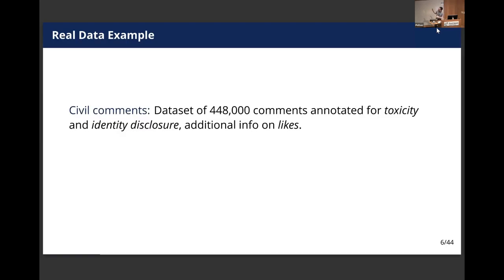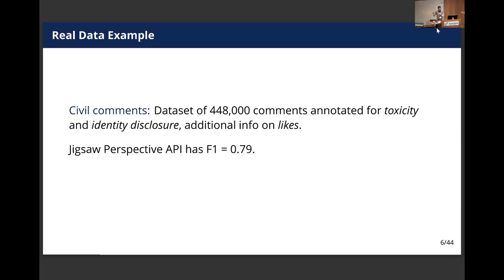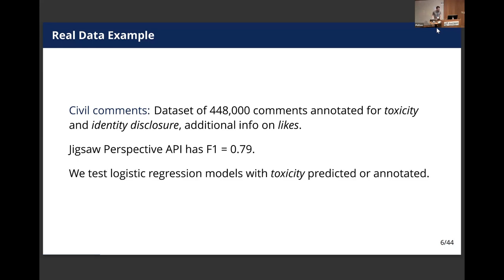I'm going to show that this is a problem using a real data example from the Civil Comments dataset — 448,000 comments annotated by humans for whether the comment is toxic and whether it discloses identity, such as someone's race or ethnicity. We also use the number of times the comment was liked. We ran this human-annotated dataset through the widely used Jigsaw Perspective API — Jigsaw is a company that's part of Google. The Civil Comments dataset is actually part of the data used to build this API, and it does very well at predicting the toxicity label, with an AUC of 0.79. We can then test what happens when we use logistic regression with toxicity either predicted by Perspective or manually annotated.